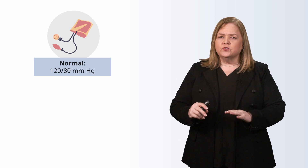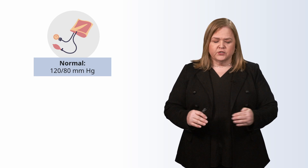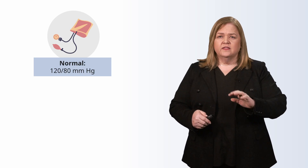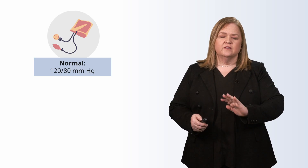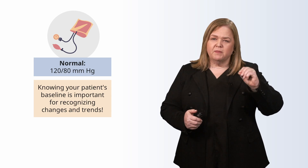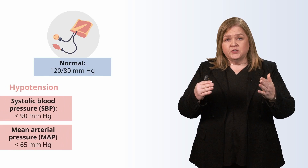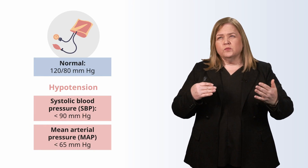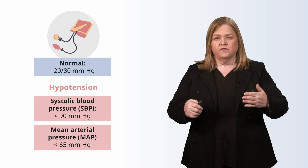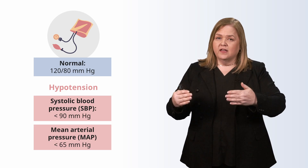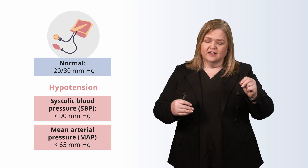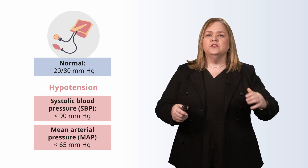There is a side note: individuals with chronically high blood pressure may not meet what we typically expect. Know your patient's baseline. In hypovolemia, we normally expect the systolic blood pressure to be less than 90, and a mean arterial pressure of less than 65. Less blood in the intravascular space leads to a lower-than-normal blood pressure. On the NCLEX, 120 over 80 is assumed to be normal for everyone.